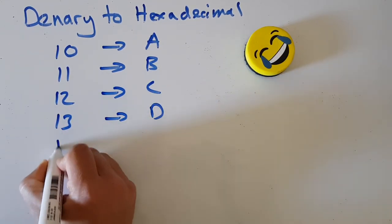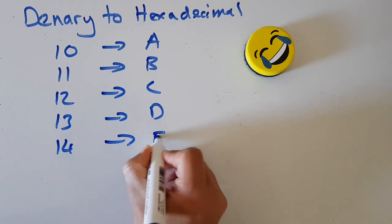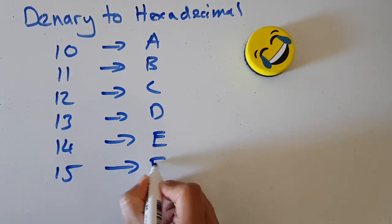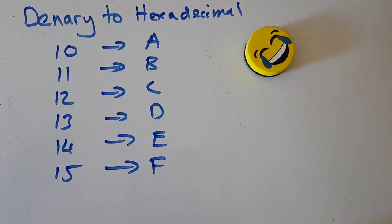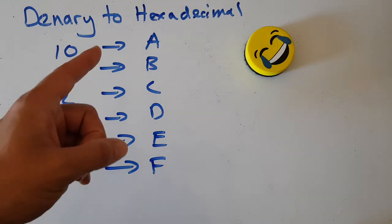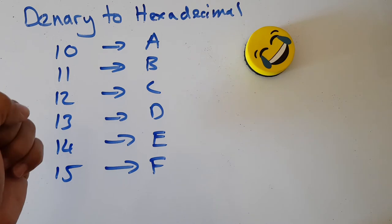C, D, E, F. So how do we count from nought to 15 in hexadecimal? Have a go at yourself, press pause.